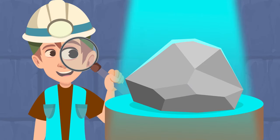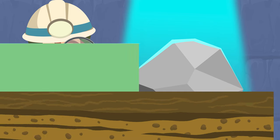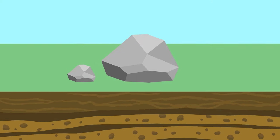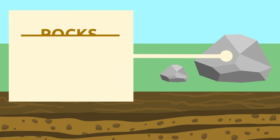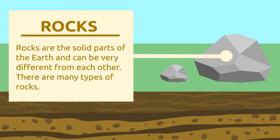Look at this stone — I've never seen one like this before. You know what? It's a rock, though sometimes we also call them stones. Rocks are the solid parts of the earth and can be very different from each other. There are many types of rocks.